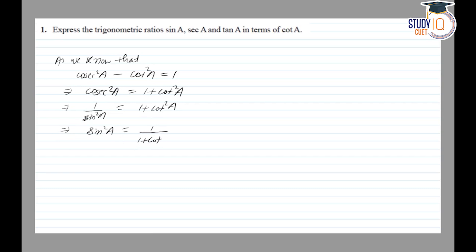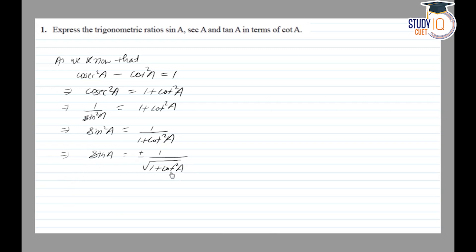Therefore, sin A is equal to plus or minus 1 divided by the square root of (1 + cot²A).